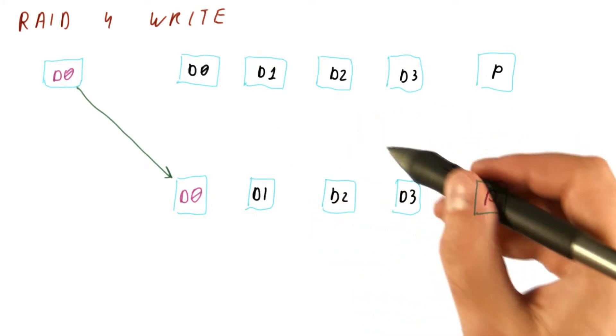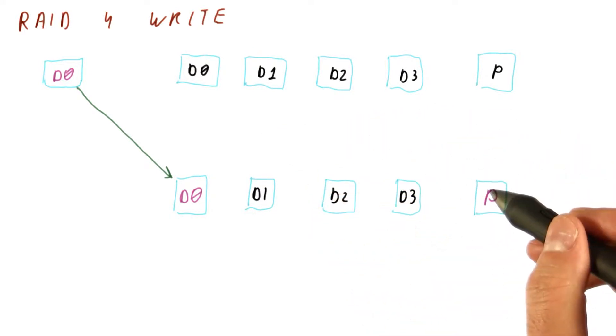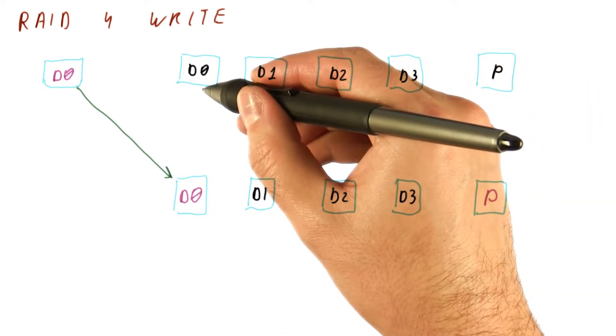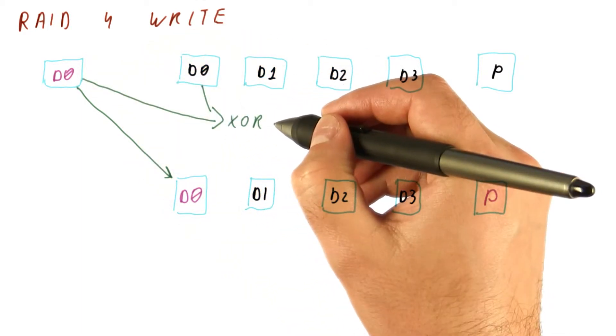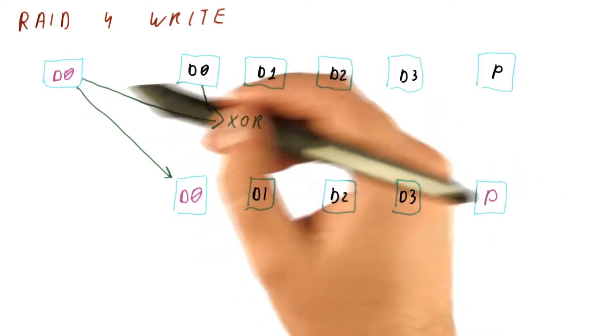So instead, we are going to figure out how to update this parity. What we need to know is what was the old data and the new data. If we XOR these, we get which bits of the data have changed.